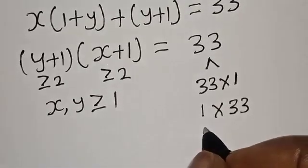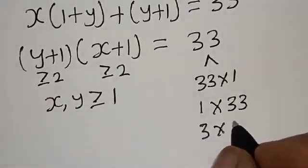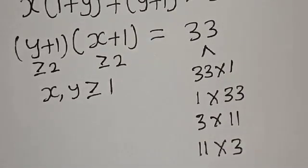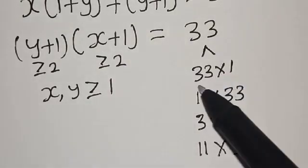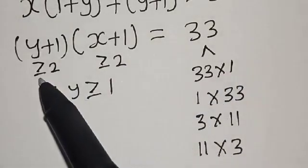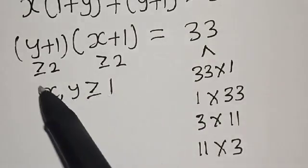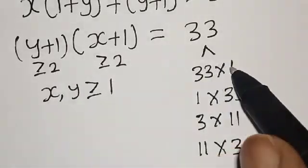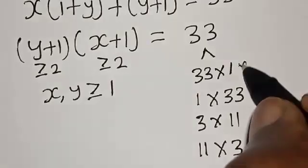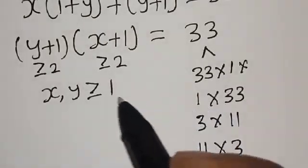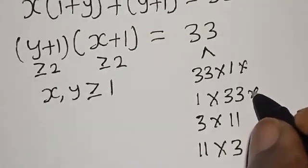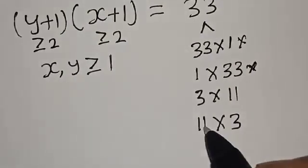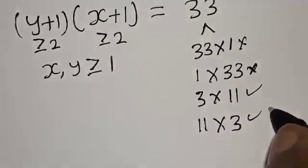Since y plus 1 and x plus 1 are both greater than or equal to 2, we can eliminate 33 times 1 because 1 is less than 2, and also 1 times 33 because 1 is less than 2. We accept 3 times 11 and 11 times 3 since both 3 and 11 are greater than 2.